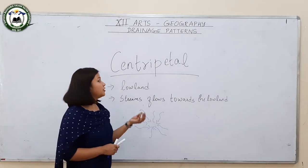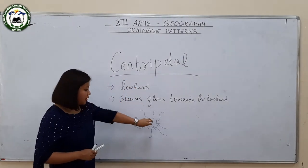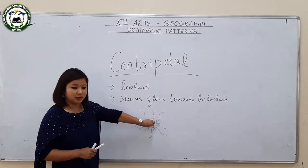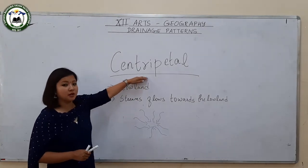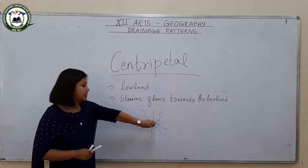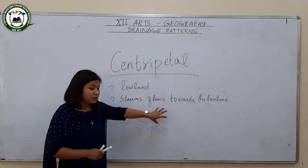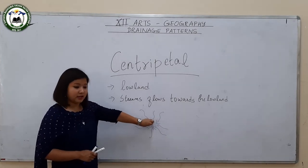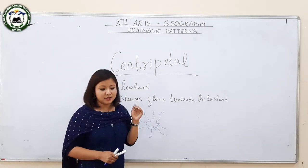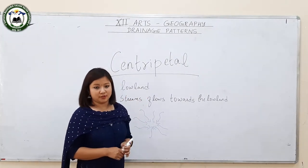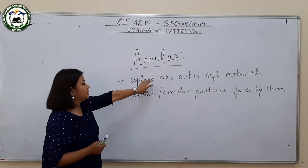Another subtype is centripetal pattern, which is opposite to radial or centrifugal pattern. In radial pattern there is an upland in the middle from which streams radiate outward, but in centripetal pattern there is a lowland in the middle and streams from all directions flow towards that lowland. It is mostly prevalent in the Tibetan Highlands and in the Bagmati river.